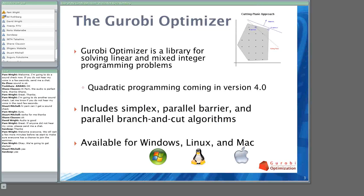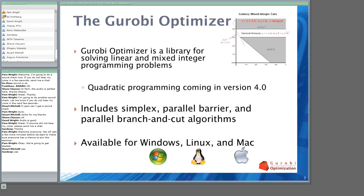Our library is available for Windows — all recent variants — 32-bit and 64-bit. It's also available for Linux, 32-bit and 64-bit for the most popular distributions: Red Hat, SUSE, and Ubuntu. And we also have a version for the Macintosh.